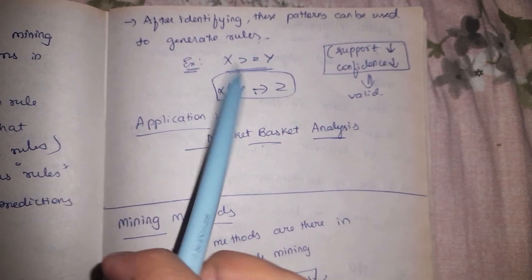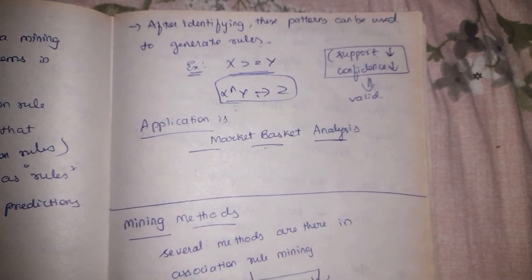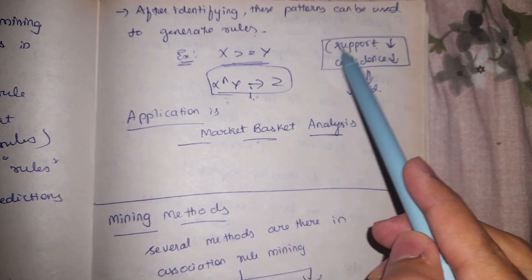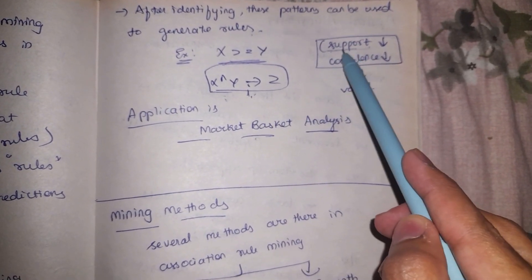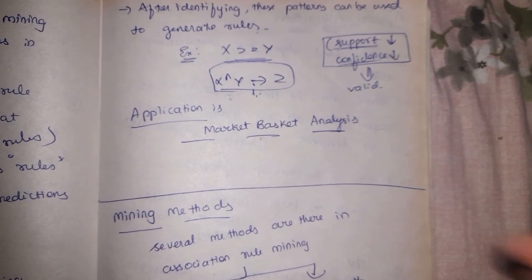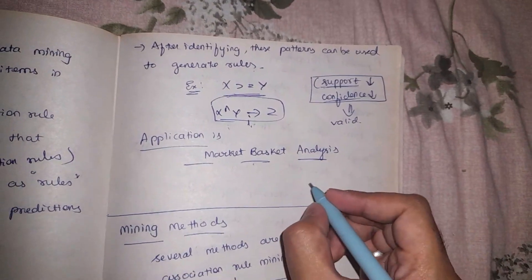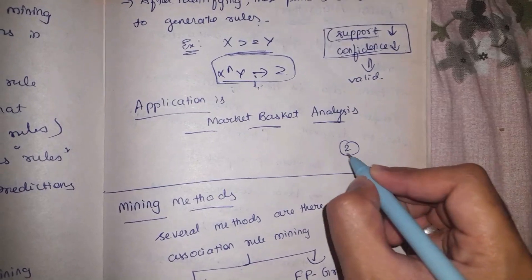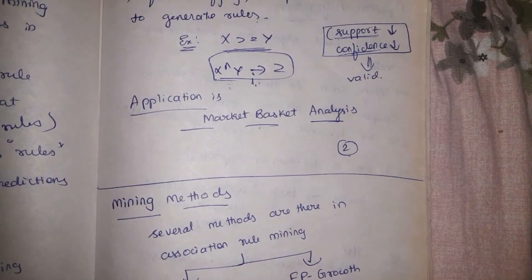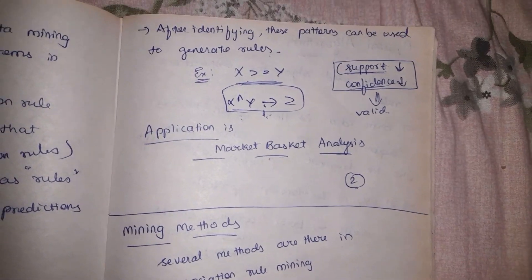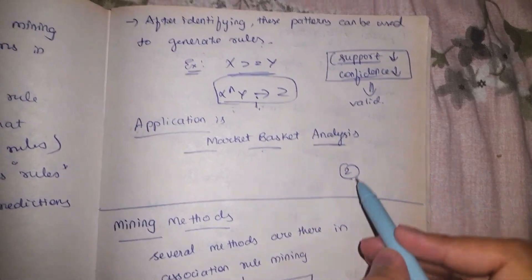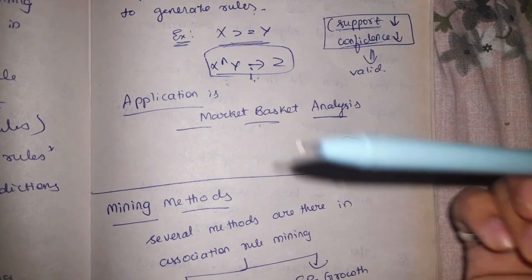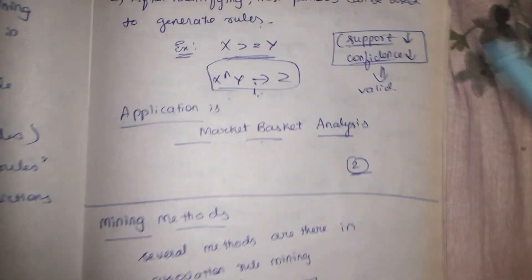Based on these association rules, support and confidence are decided. For an association rule to be valid, it should meet a minimum support and minimum confidence threshold. The minimum support typically means the items should be repeated at least once in a particular dataset.